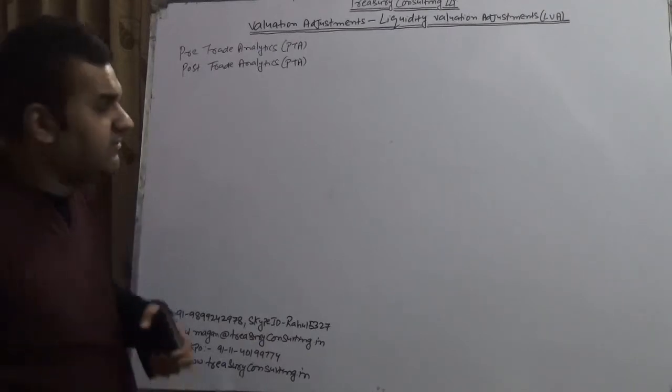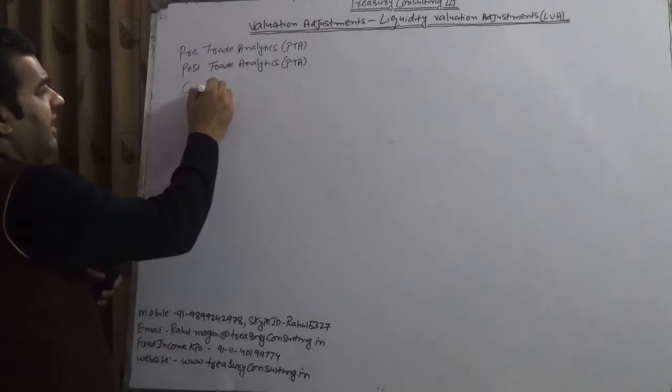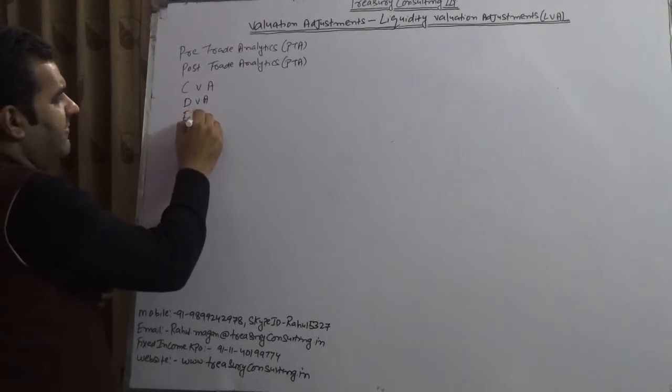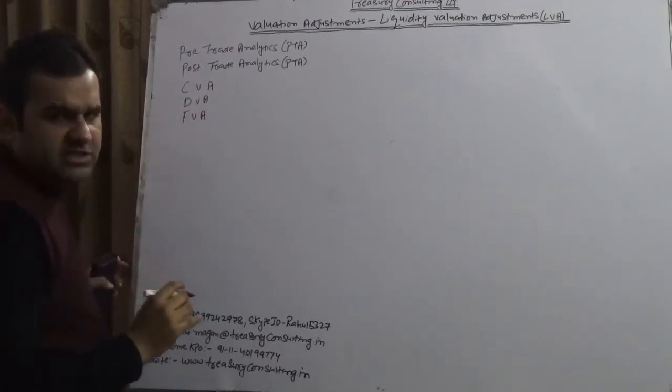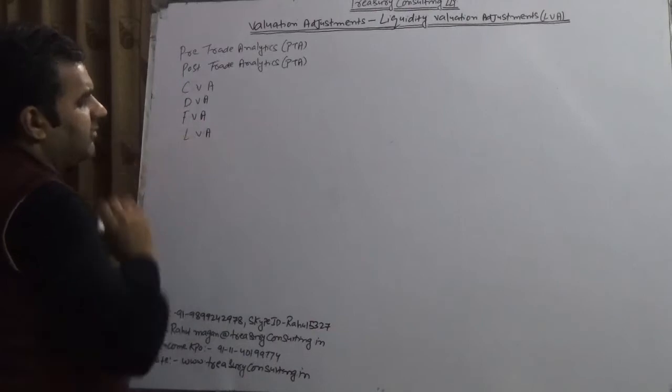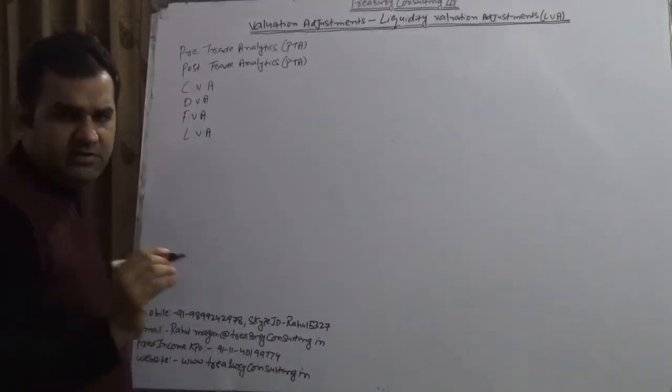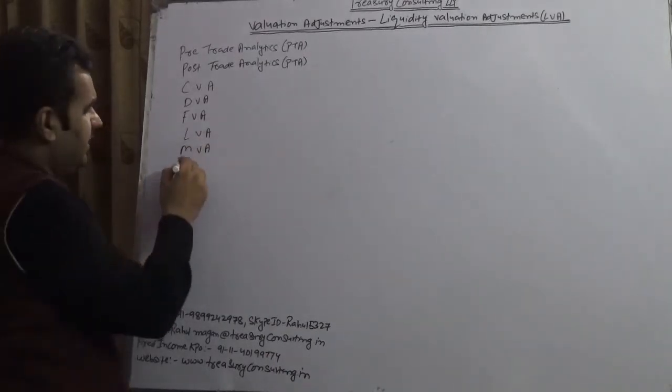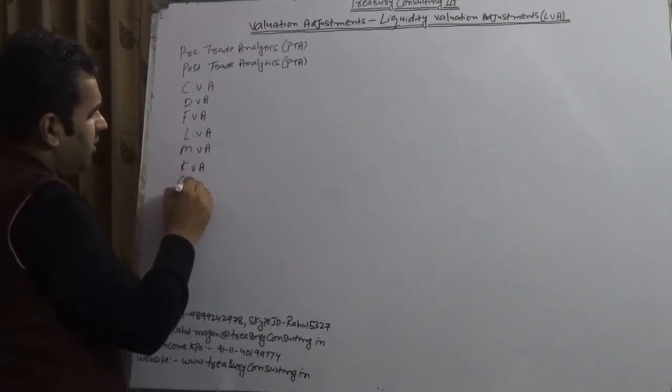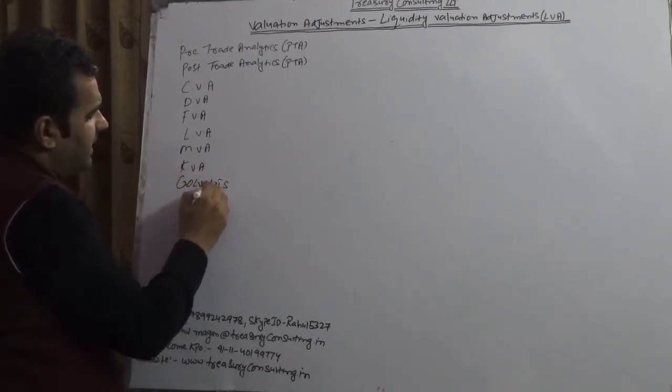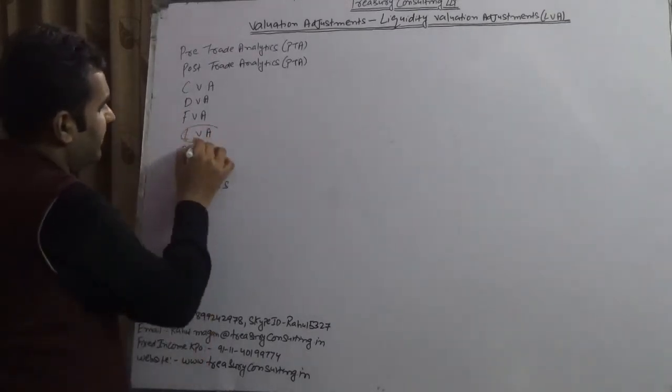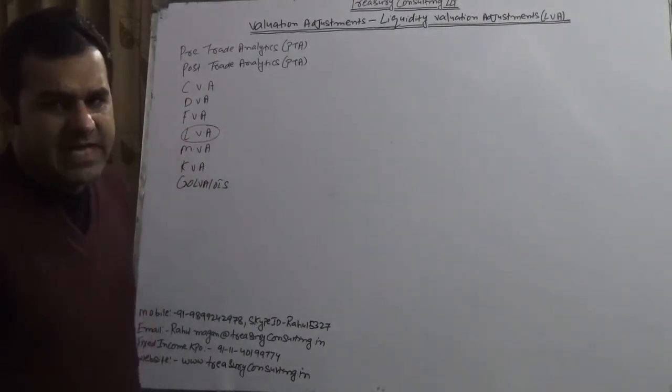These include CVA (Credit Valuation Adjustment), DVA (Debit Valuation Adjustment), FVA (Funding Valuation Adjustment), LVA (Liquidity Valuation Adjustment) which I'm going to talk about now, MVA (Margin Valuation Adjustment), KVA (Capital Valuation Adjustment), and KOLVA (Collateralized Valuation Adjustment). We're going to be covering this now.